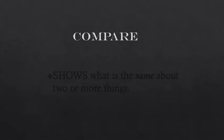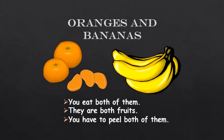For example, I have oranges and bananas. How are they similar? You eat both of them — they are both fruits. You have to peel both of them; you cannot eat them before being peeled. So here I am comparing — I'm showing their similarities.